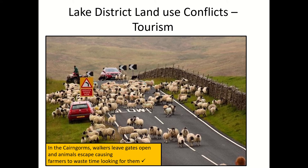This picture is from the Cairngorms, but it would also apply to the Lake District. Sometimes walkers leave gates open, and when the gates are open it can cause animals to escape. This means the farmer wastes time looking for them, but it can also cause accidents to happen. It's really important to link the idea that walkers leaving gates open and animals escaping impacts the farmer — it causes them to waste time, or it can cause accidents. You've got to demonstrate why it's a problem; you can't just say walkers leave gates open and animals escape without pointing out why that's a problem.